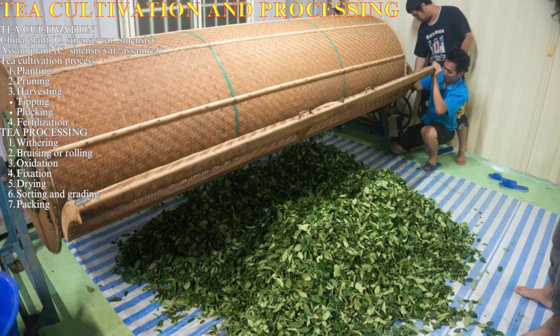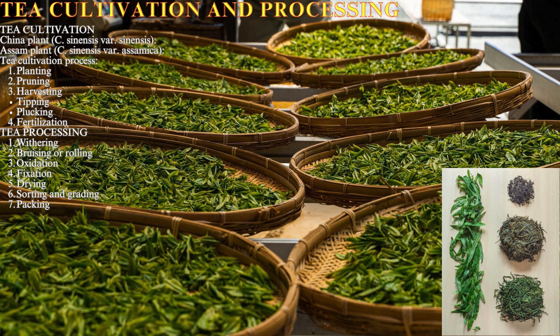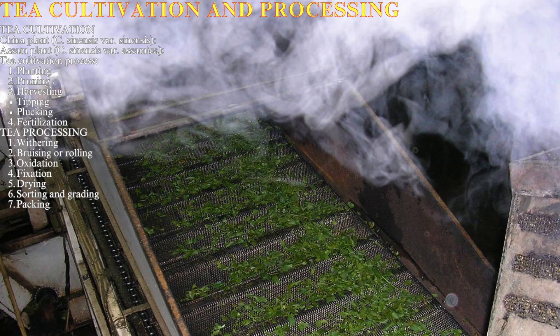Step three is oxidation: for black and oolong teas, the leaves are allowed to oxidize. Enzymes in the leaves react with oxygen in the air, turning the leaves brown and developing the characteristic flavor of black tea. Step four is fixation: the oxidation process is stopped by applying heat, which can be done by steaming, pan firing, or baking the leaves.